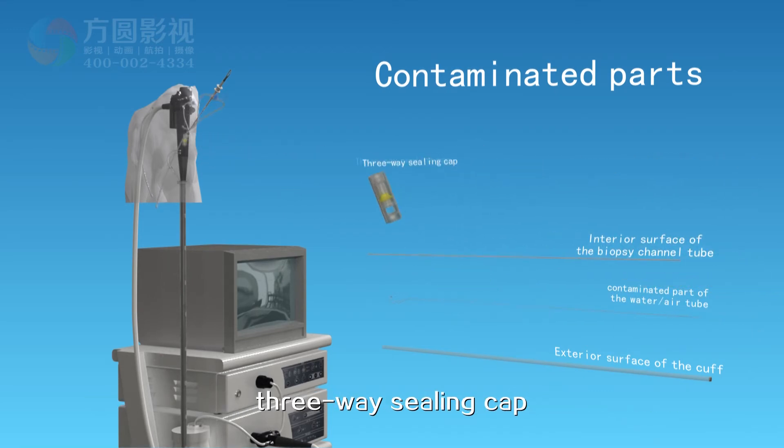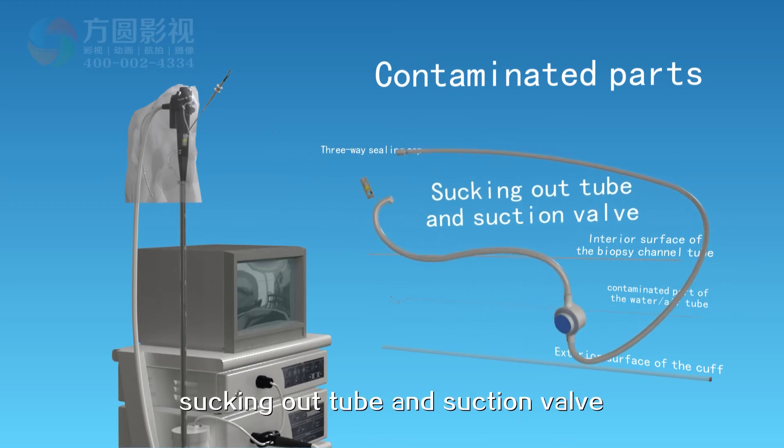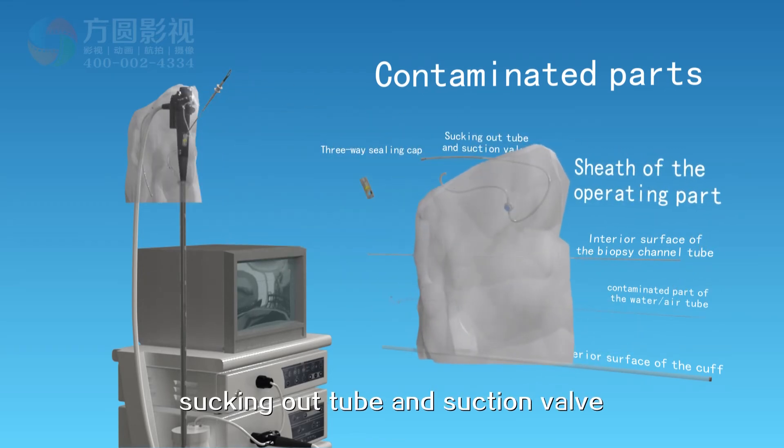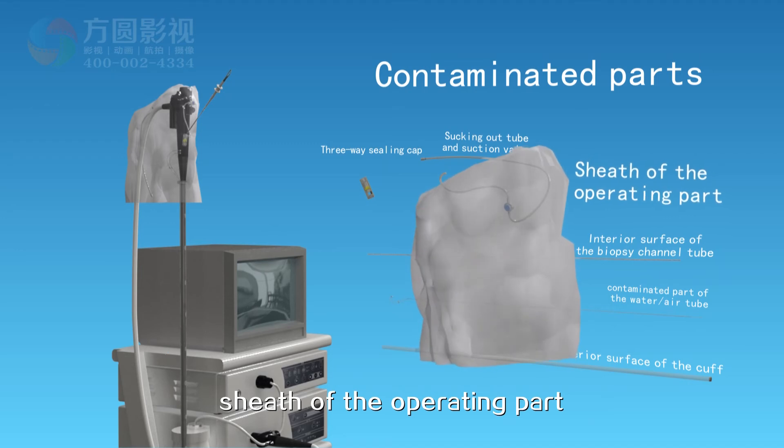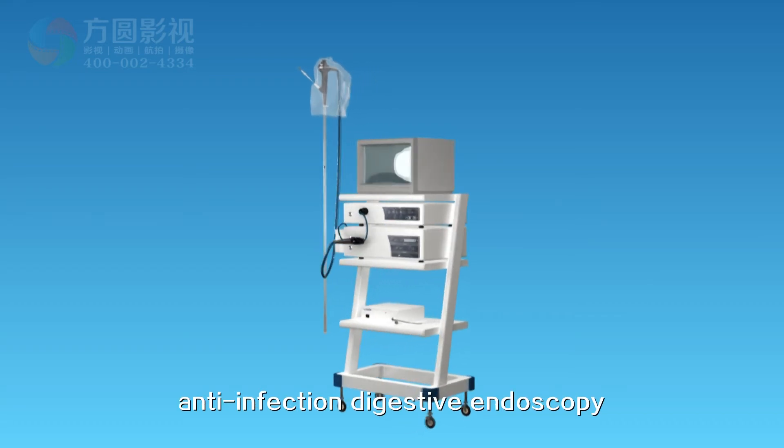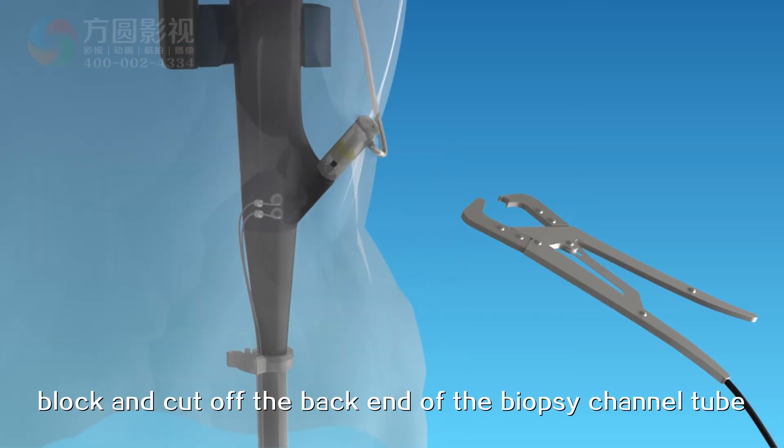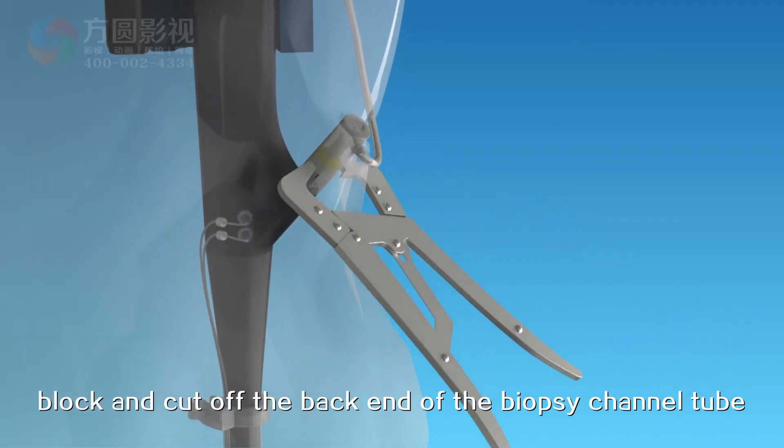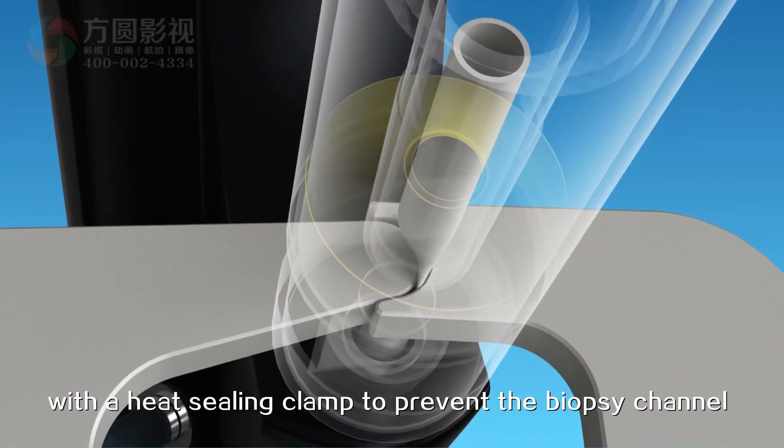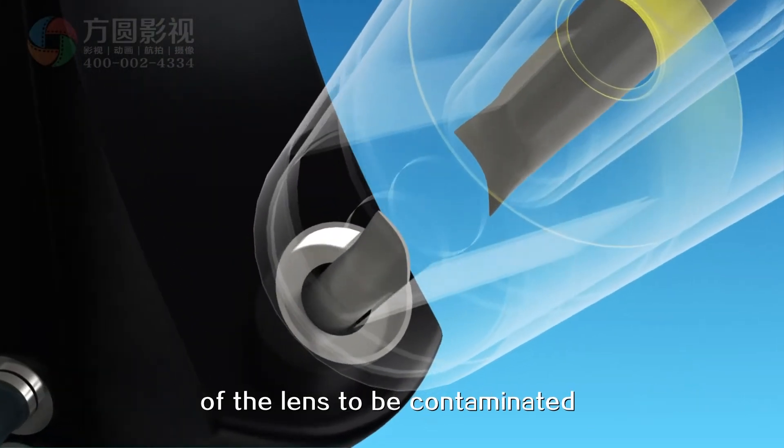Other contaminated parts include the three-way sealant tube, three-way sealing cap, sucking out tube and suction valve, and sheath of the operating part. Before dismantling the portable anti-infection digestive endoscopy, cut off the back end of the biopsy channel tube at the sealing position below the three-way sealant cap with a heat sealing clamp to prevent the biopsy channel of the lens from being contaminated.